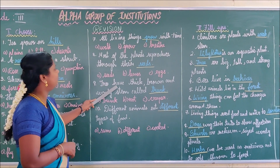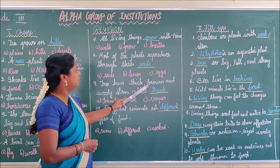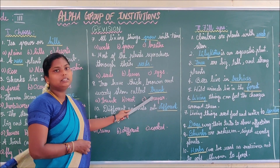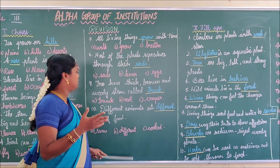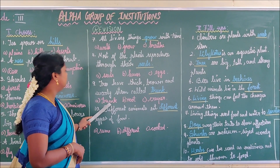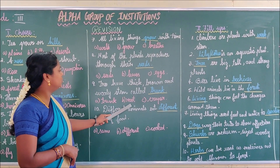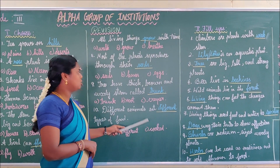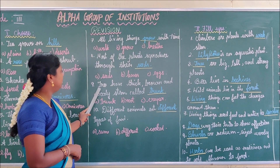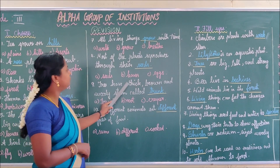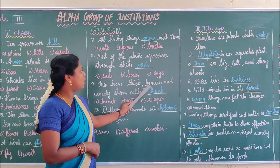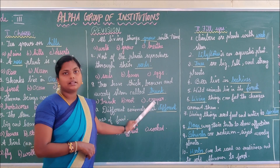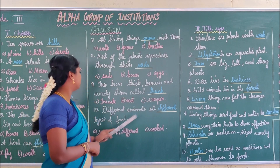Next question: Trees have a thick, rough and woody stem called blank — trunk, root, or creeper? It is called trunk. Trees have a thick, rough and woody stem called trunk.